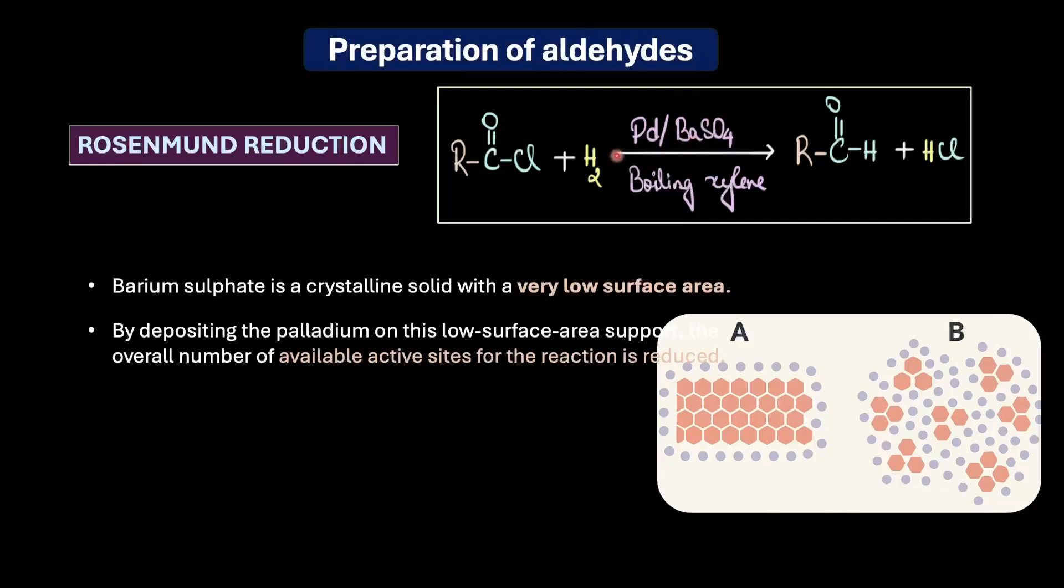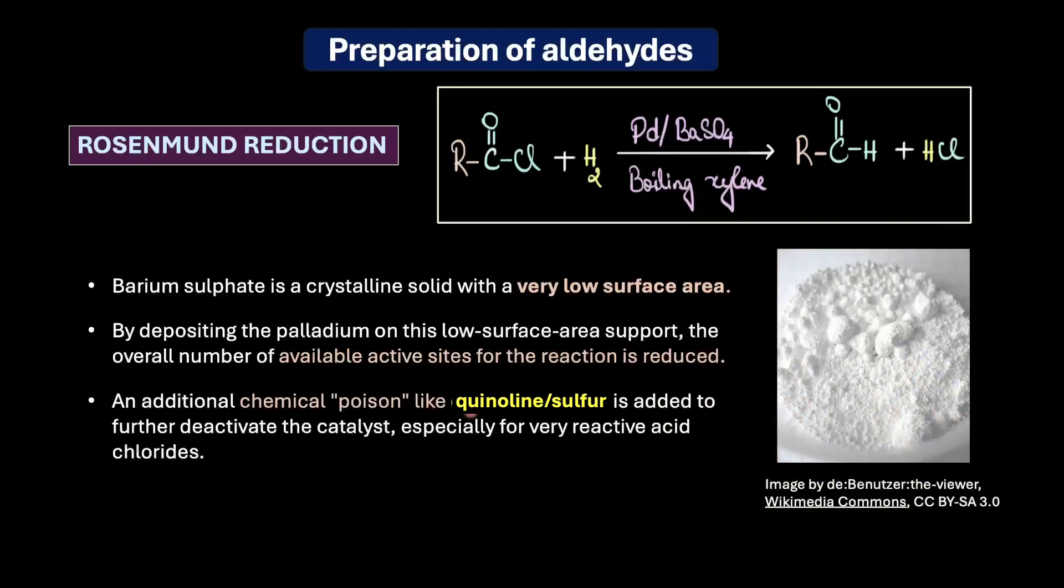When we use barium sulfate as a physical support, palladium is still active, still reactive enough to catalyze the first reduction from acid chloride to aldehyde, but its activity is so diminished now that it cannot further reduce this aldehyde to a primary alcohol. In addition to using barium sulfate as a physical support, we also use an additional chemical poison like quinoline or sulfur to further deactivate the catalyst, especially for reactive substrates like acid chloride.